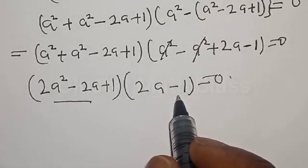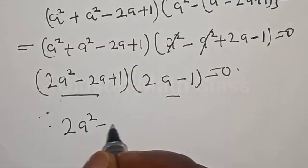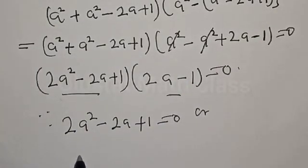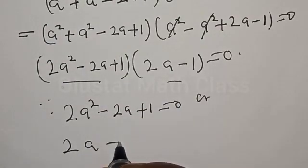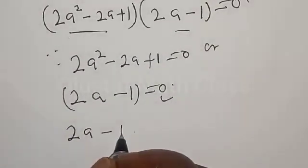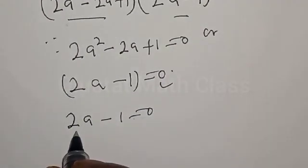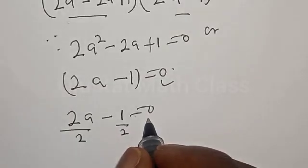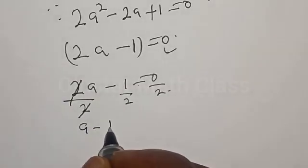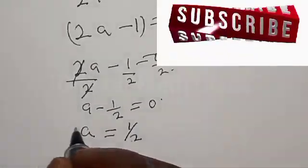So we have two cases: 2a² - 2a + 1 = 0, or 2a - 1 = 0. From 2a - 1 = 0, we divide both sides by 2. This gives a = 1/2. That is one of the roots.